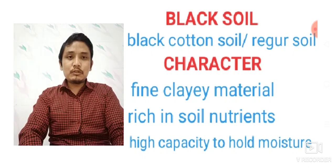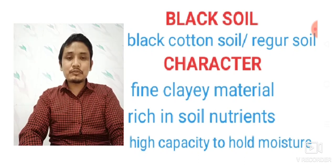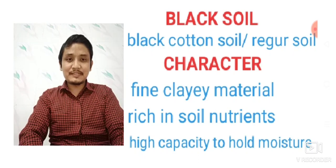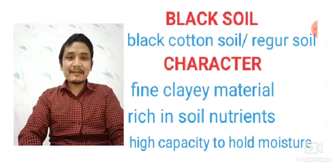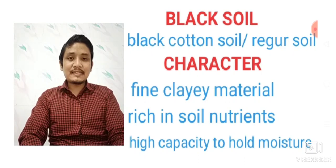Black soil is also called black cotton soil because it is suitable for the production of cotton. It is also called regur soil. The characteristics of black soil are very important. First, it is made up of fine clay material — very fine particles of clay. Second, it is rich in soil nutrients. Third, it has a very high capacity to hold moisture. During dry times, we can see cracks in this soil, as it gets dry and develops visible cracks.